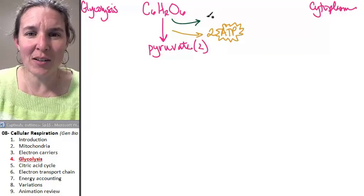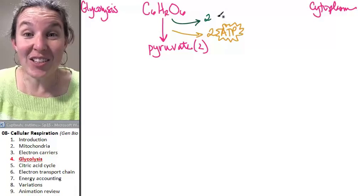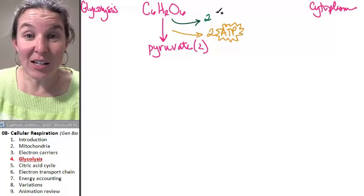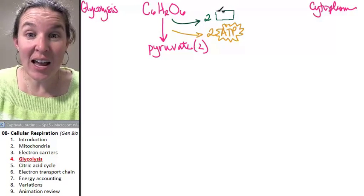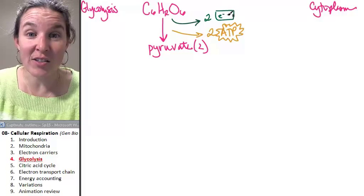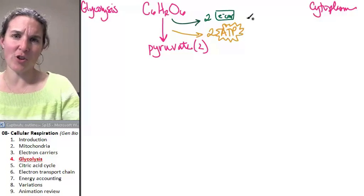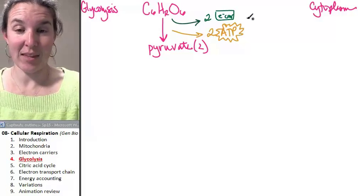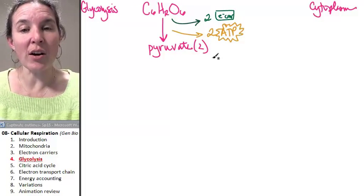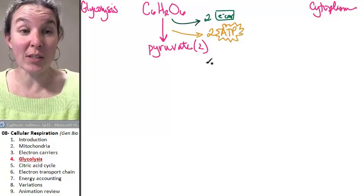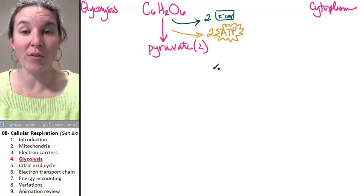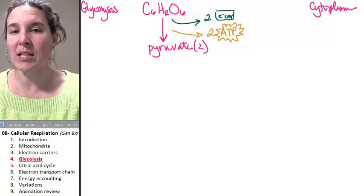We also have high-energy electron carriers. Two high-energy electron carriers are produced, and you will see why we're keeping track of those, along with the two molecules of ATP.